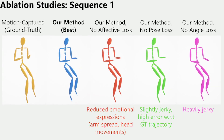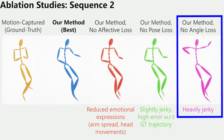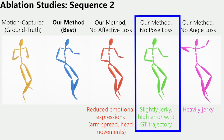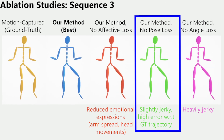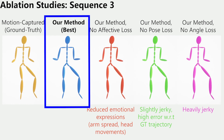To analyze the contribution of each of these losses, we perform ablation studies. We remove one loss at a time and retrain our network with the remaining losses. We visualize the performance of each of these ablated versions on four sample test sequences. As we can observe, removing the angle loss makes the generated gestures heavily jerky. Removing the pose loss also causes some jerk and the generated joint trajectories deviate a lot from the corresponding ground truth trajectories. Removing the affective loss reduces the emotive body expressions in the generated gestures, causing smaller arm spreads and lower head movements. We notice the best performance when using all of these losses together in our network.